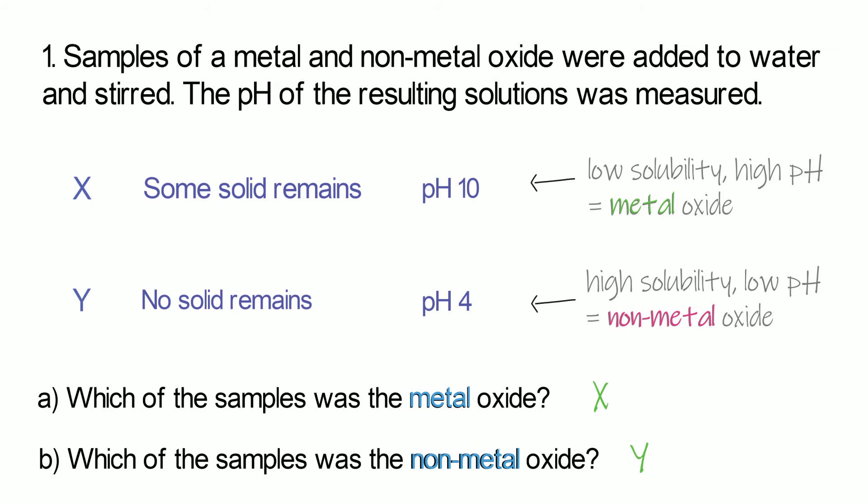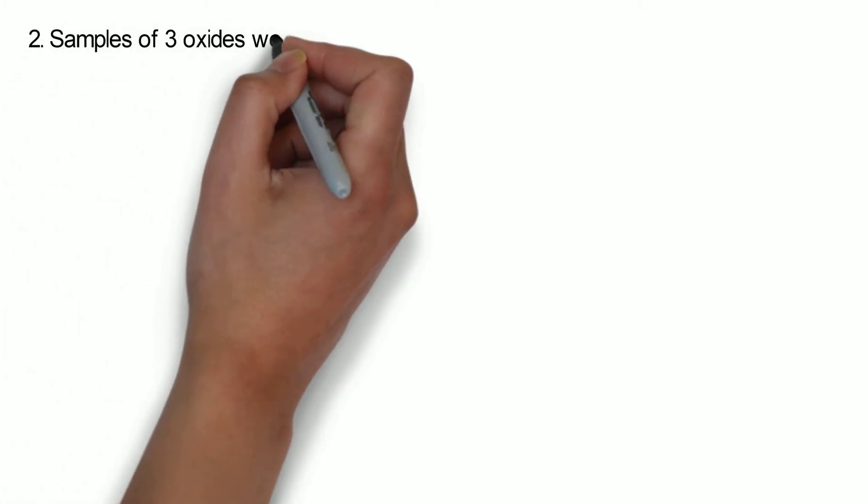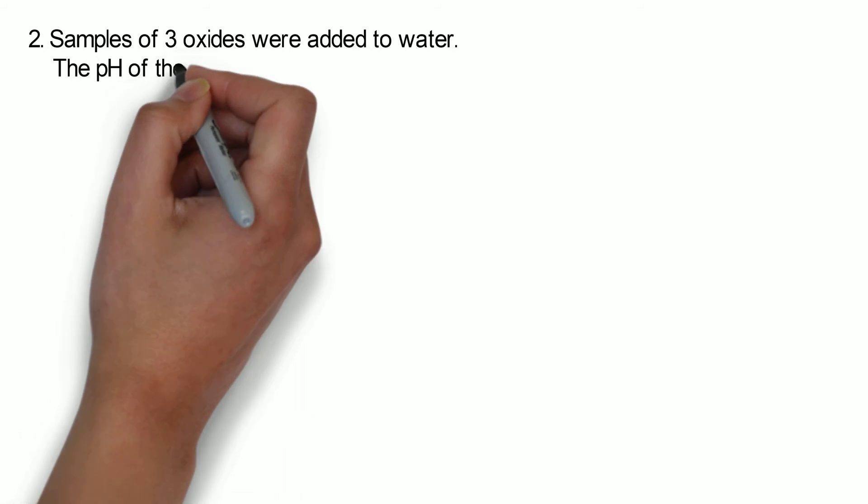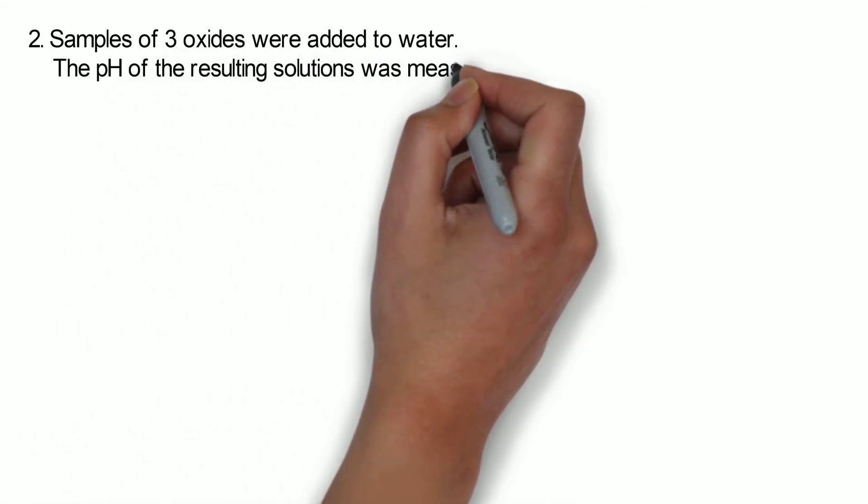So there's an example with just two. But you might be given an exam question where you're given a table of data about a few different oxides and you've got to figure out which one's which. So the question might look something like this. Three oxides are added to water. The pH of the solutions is measured.